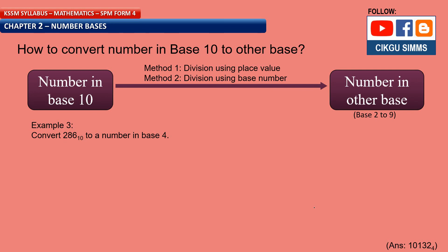Let's see another example: convert 286 base 10 to base 4 using method 2, division by the base number. Take 286 divided by 4: 4 times 71 is 284, so answer is 71 with remainder 2. Write remainder 2 at the side.